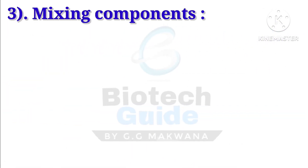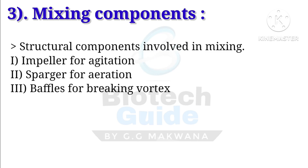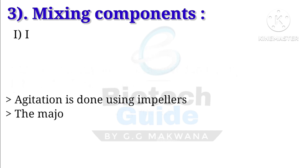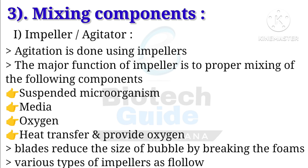The third main section is mixing components. Three main structural components are there for mixing: first, the impeller for the agitation process; second, the sparger for aeration; and third, baffles for breaking vortex. First, the impeller, also known as the agitator — the agitation process is mainly done by impellers.